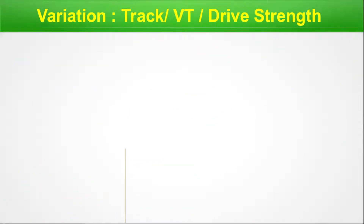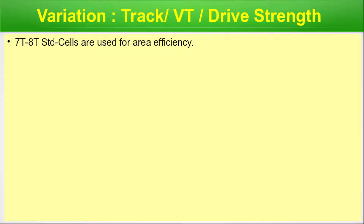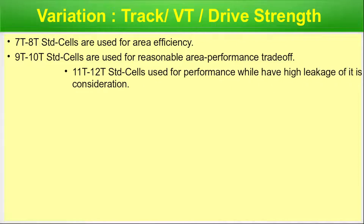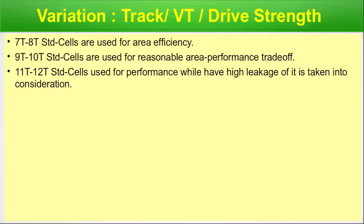Standard cell variation can occur across track, threshold voltage (VT), and drive strength. Regarding track: 7T–8T standard cells are used for area efficiency; 9T–10T cells offer reasonable area and performance balance; 11T and 12T standard cells are used for performance, though with higher leakage. These are typical ranges — actual values may vary slightly per foundry or IP vendor.